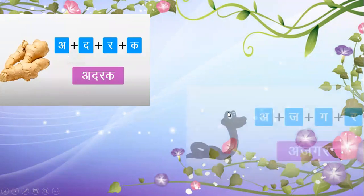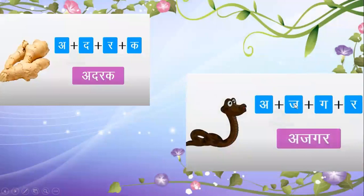Now what is the next word? A-J-G-R — Ajgar. Kya hai ye? A-J-G-R — Ajgar means python. You can see the picture also. A-D-R-K, A-J-G-R.